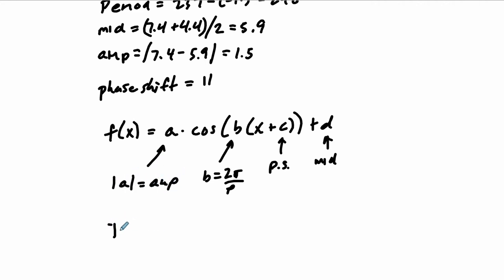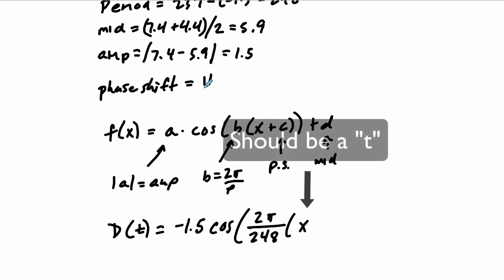So for us, D of T, I'm going to flip this upside down so it's negative 1.5. If this number is negative, it reflects the trig wave. Just like any function, if you multiply by a negative, the output by a negative number, it will reflect it over an axis here. Times the cosine of 2 pi over my period, 2 pi over 248 days, times X. So our phase shift was 11 to the left. So you're adding 11 there. And then plus our midline of 5.9. And that's our function.